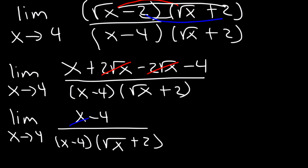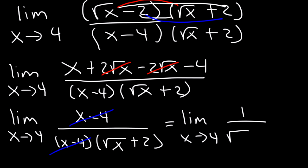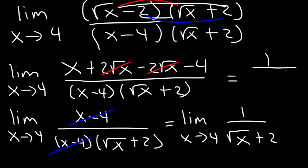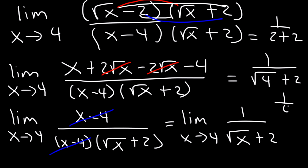These two (x minus 4) expressions cancel. So we're left with the limit as x approaches 4 of 1 divided by the square root of x plus 2. At this point, we can use direct substitution. That's 1 divided by the square root of 4 plus 2. The square root of 4 is 2, so we have 2 plus 2 equals 4. The final answer is 1 over 4.